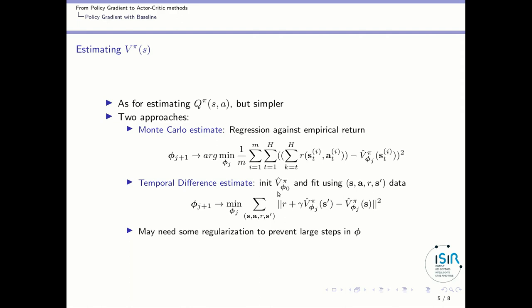Or we take the temporal difference estimate, where, again, we fit state action reward and next state samples using the temporal difference error. So this is exactly the same as with the action value function. And, again, we may need some regularization to prevent large step in the critic parameters, and this is what is done in TRPO, for instance.